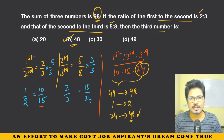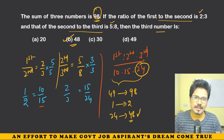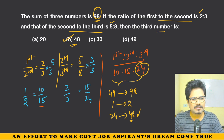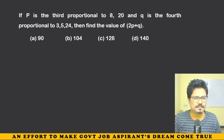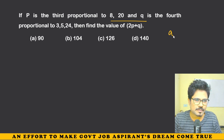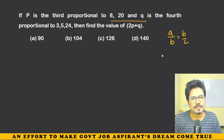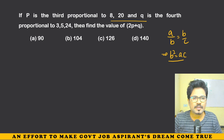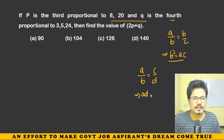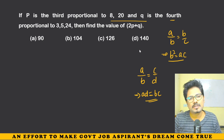This was an easy question — it can be done in maximum 30 seconds. Now for the theory: if P is the third proportional to A and Q, then A:B = B:C, which means B² = AC. This is the third proportion. The fourth proportion is A:B = C:D, which means AD = BC. These are the basics.